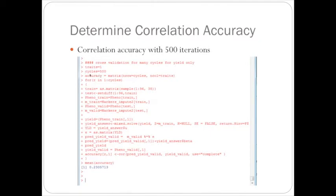And then I created an accuracy matrix of the number of cycles and the number of traits. So it's a matrix of 500. And then I ran mix.solve 500 times and got 500 correlation accuracies in this accuracy matrix, and then just took the mean of the matrix.